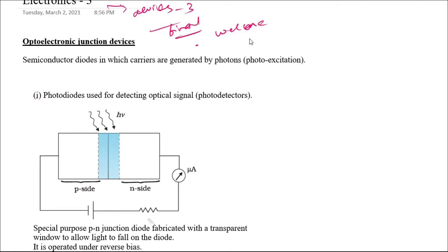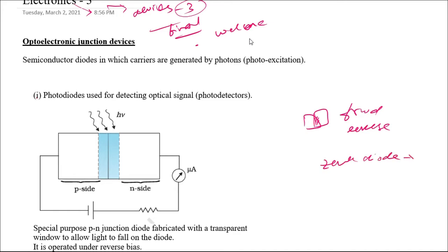Hello friends, welcome to today's video. We'll be continuing our series on electronic devices. This is the third and final video on this topic. In the previous video we studied the formation of PN diode and how diodes are useful under forward bias as well as reverse bias, where the Zener diode is a special case used as a voltage regulator. All these previous devices were excited by voltage — when external voltage is applied, they conduct.